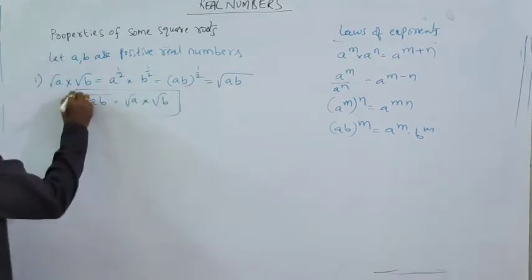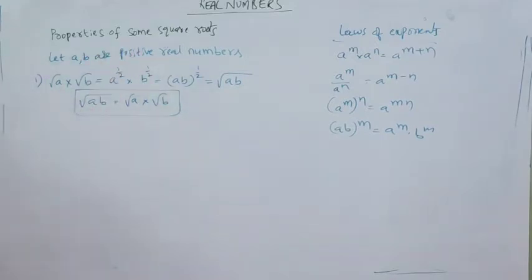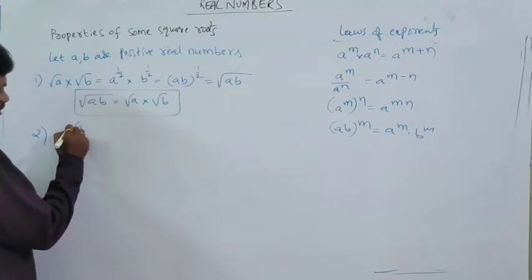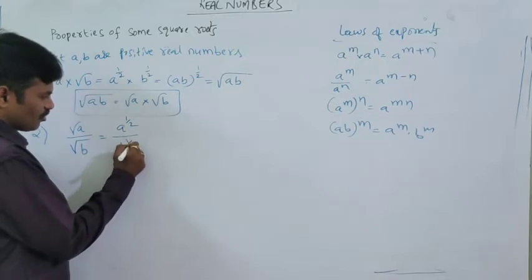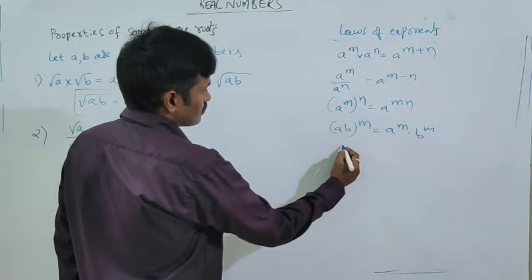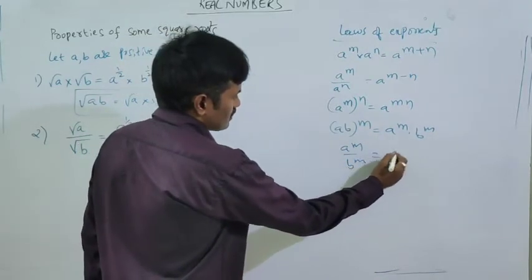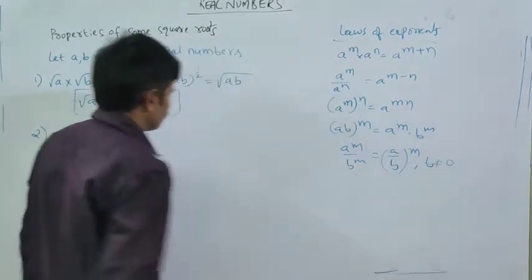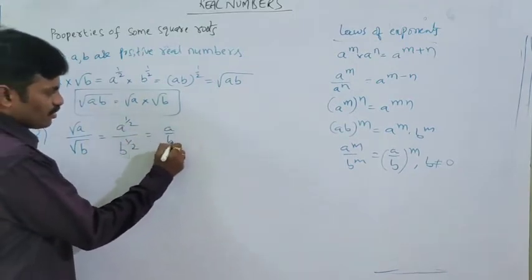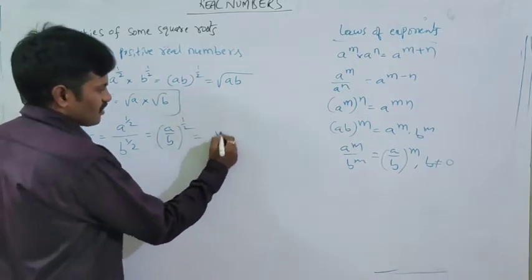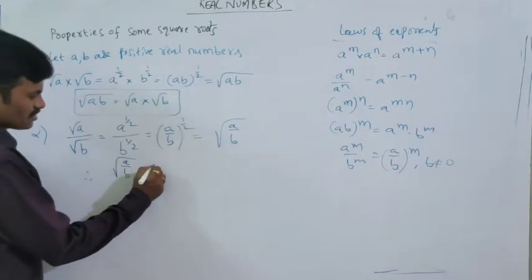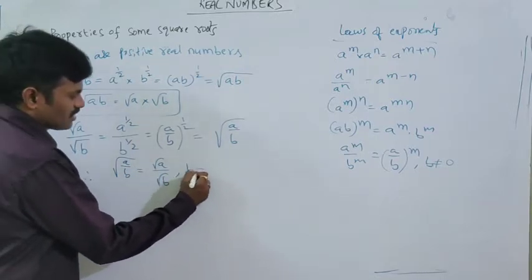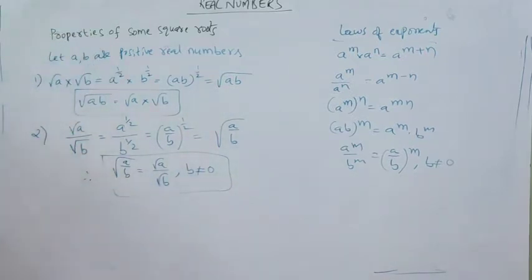This holds for A and B as positive real numbers as already defined. Similarly, the second rule is the quotient rule: root A divided by root B. Square root of A can be written as A power 1 by 2, and square root of B as B power 1 by 2. Using the law of exponents, A by B whole to the power of 1 by 2, which can be written as square root of A by B. So square root of A by B can be written as square root of A divided by square root of B individually, where B is not equal to 0. This is the second rule, for positive real numbers.